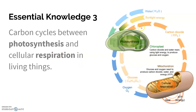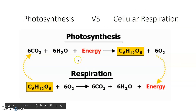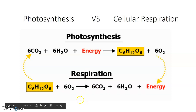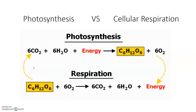Photosynthesis is primary producers taking carbon dioxide and water, then using solar energy to rearrange those particles to create glucose and oxygen. Respiration is the opposite of that process. For the AP exam, you can get away with saying carbon dioxide, water, and sunlight make glucose and oxygen, but it never hurts to have the exact formula memorized.